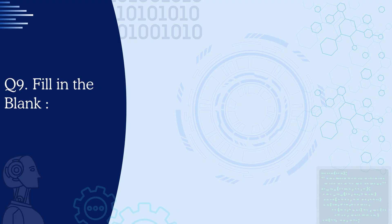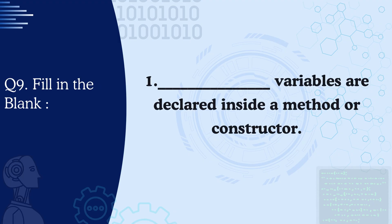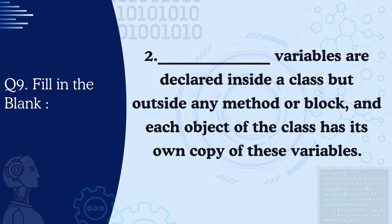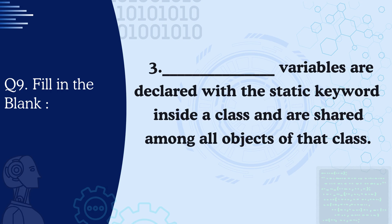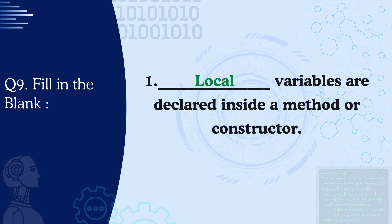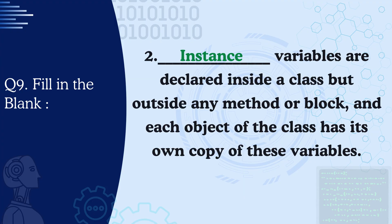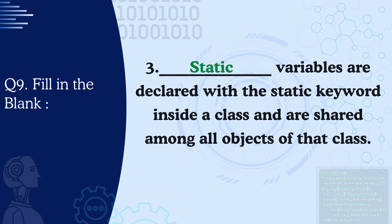Question 9: Fill in the blank. Local variables are declared inside a method or a constructor. Instance variables are declared inside a class but outside any method or block, and each object of the class has its own copy of these variables. Static variables are declared with the static keyword inside a class, and are shared among all the objects of that class.